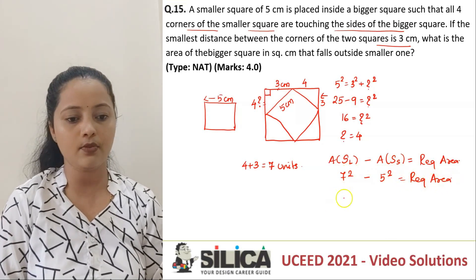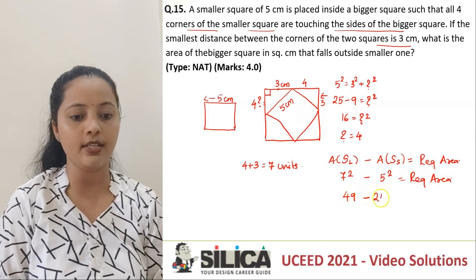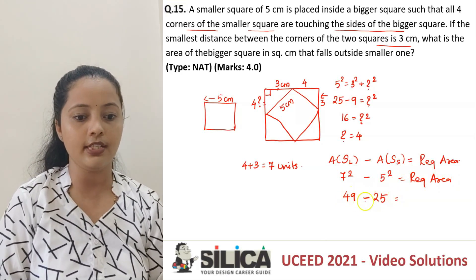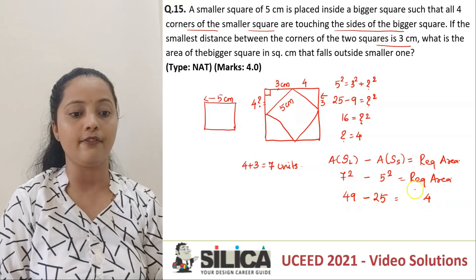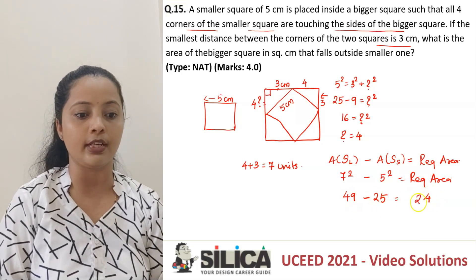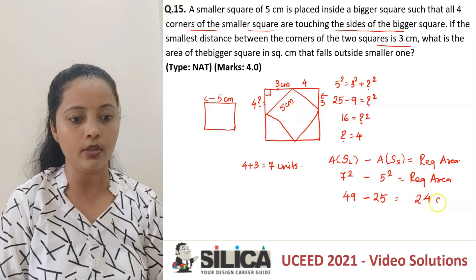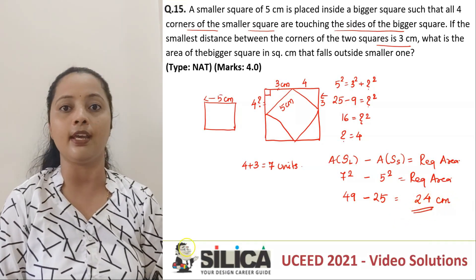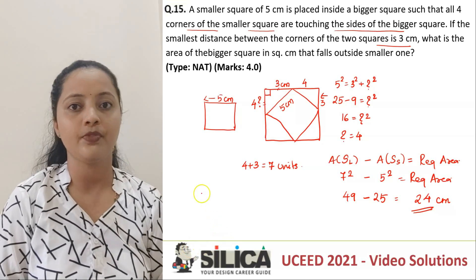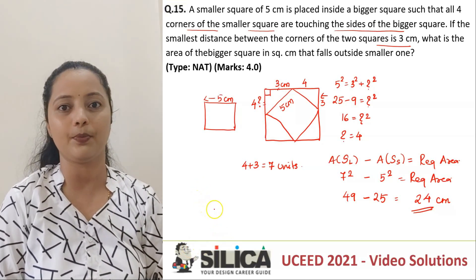So 7 squared is 49, minus 5 squared which is 25, gives us 24. So the answer is 24 square centimeters. That's the required area in the question. Thank you.